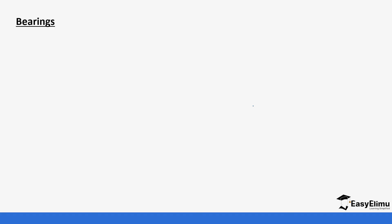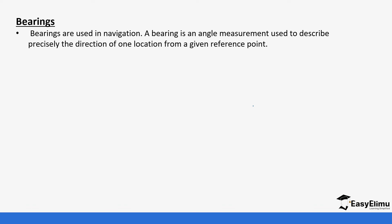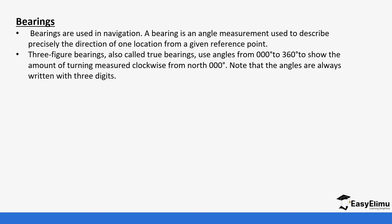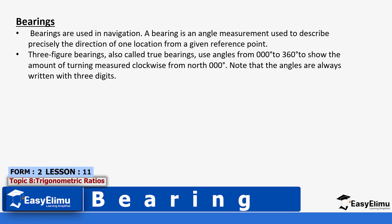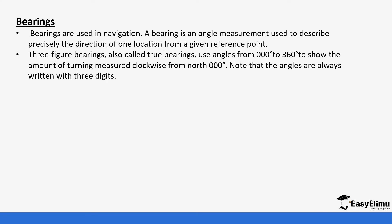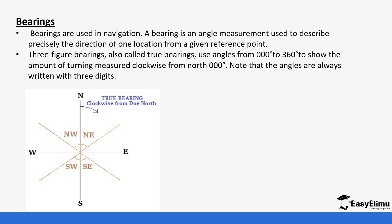Let's start by looking at bearings. Bearings are used in navigation. A bearing is an angle measurement used to describe precisely the direction of one location from a given reference point. Three-figure bearings, also referred to as true bearings, use angles from 000 degrees to 360 degrees to show the amount of turning measured clockwise from north. You always write those digits as three digits when using true bearing, moving clockwise from north — 90, 90, 90, 90 — totalling 360 degrees.